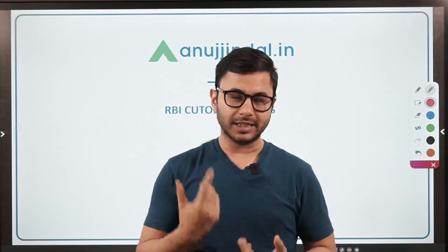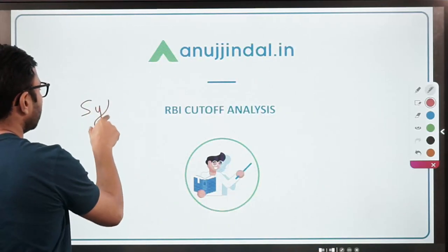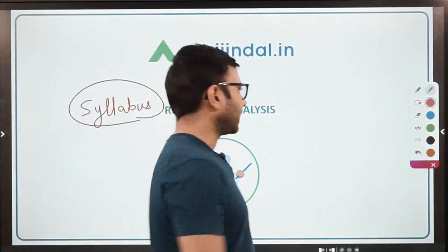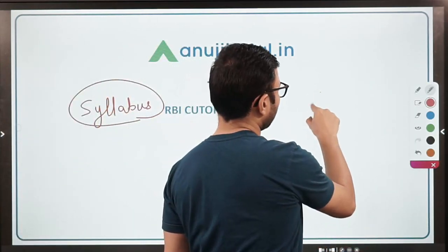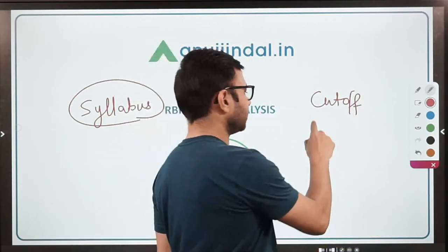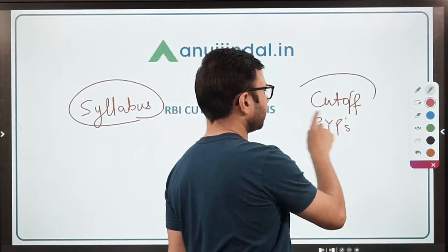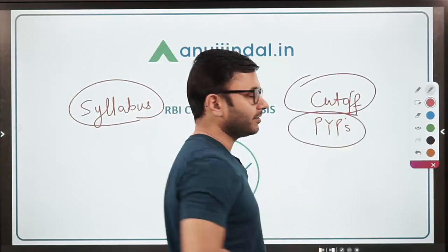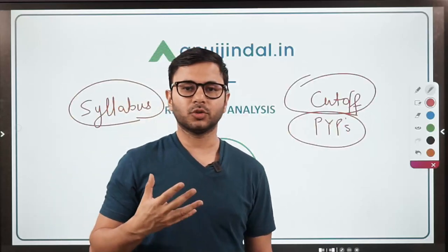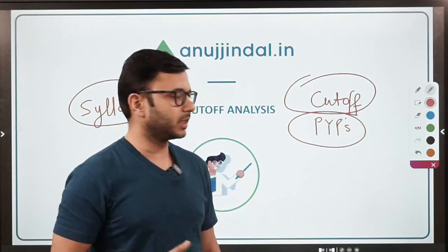The first is understanding the syllabus — we've already talked about the syllabus and will revisit it when the official notification is released. The second is discussing and understanding the cutoff. Then you try and understand the previous year's papers. This is all done before starting actual preparation. If you've already done it, you don't have to do it again, but if not, start immediately.